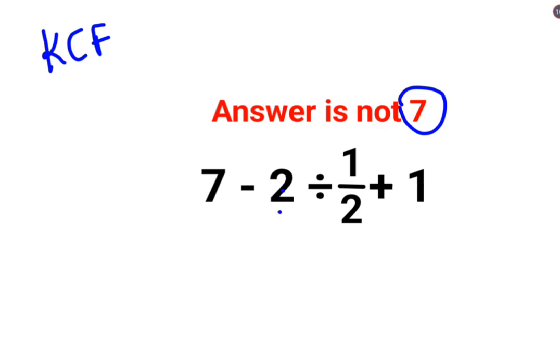So KCF means keeping the first number as it is. So 2 will be kept as it is, minus 2 rather. So we keep 7 minus 2 as it is, and then C stands for changing the division sign to multiplication, and F stands for flipping or taking reciprocal of 1 upon 2 which is 2 plus 1.